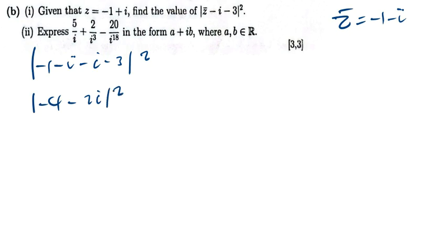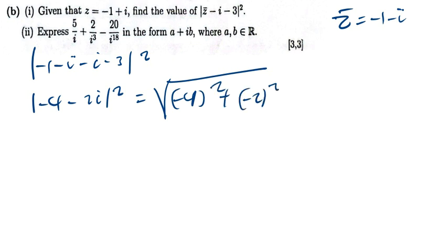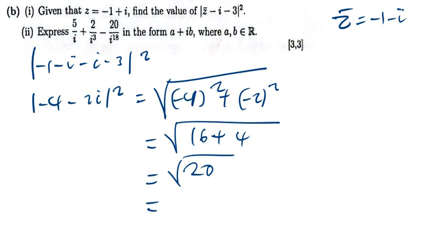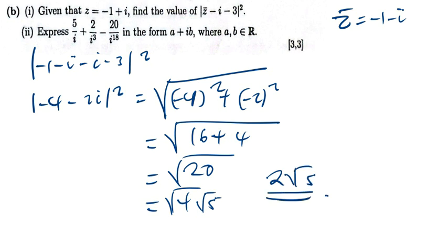If you have something which is in the modulus and it is squared, it's basically the same as finding the magnitude. So 4 squared is 16, negative 4 squared is 16, plus 4, which is 20. This can be written as the square root of 4 times 5, which gives us 2 root 5. So the answer here is 2 root 5.